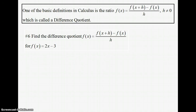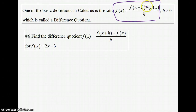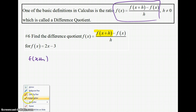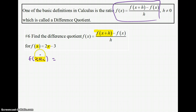The last topic is the difference quotient, one of the basic definitions of calculus — a ratio where 'difference' means subtraction and 'quotient' means division. We need to find f(x + h). The input is the quantity (x + h), so we replace x with (x + h): f(x + h) = 2(x + h) − 3.